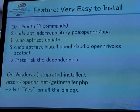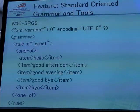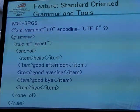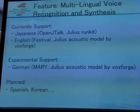For other features, it is very easy to install. On Ubuntu, it only requires three commands, and it will install all the dependencies. On Windows, you only have to run a single installer and it will do the whole job for you. We also have standards-oriented grammar and tools. If you use Julius directly, you need to learn a little bit of phonetic knowledge to write speech recognition grammar. But for OpenHRI, we use W3C SRGS grammar, which is standardized as VoiceXML grammar, so it is quite easy to edit even for novice users. We also have visualization tools for help authoring. And we support multi-lingual: we currently support Japanese and English, with experimental support for German, and we are planning to support Spanish and Korean in the near future.